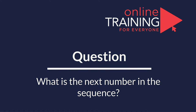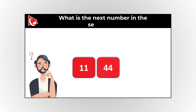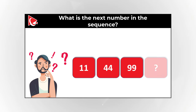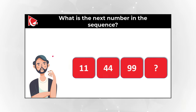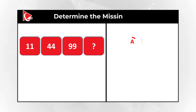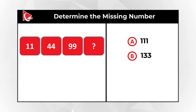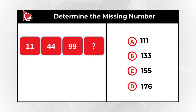Here's an interesting question where you need to calculate the missing number. You're presented with numbers 11, 44, 99, and you need to continue the sequence and determine the missing number from 4 possible choices: Choice A: 111, Choice B: 133, Choice C: 155, Choice D: 176.